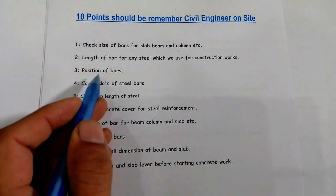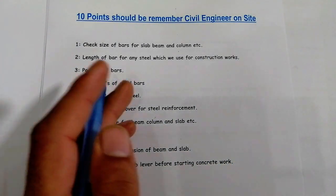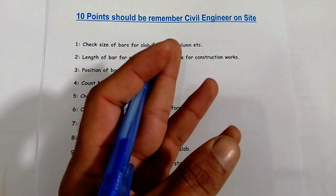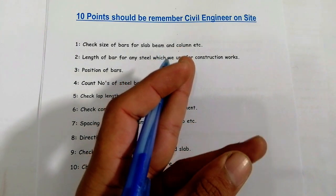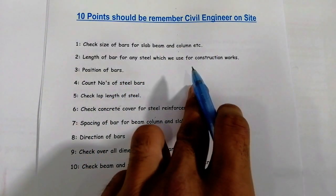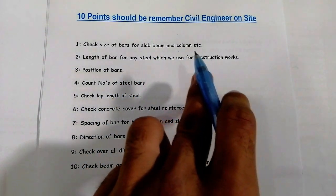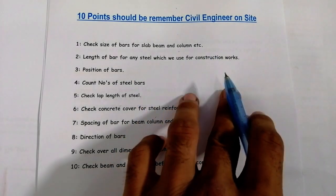The third point is: position of bars. Distribution bars and main bars — you will check the position of main bars and distribution bars and also their direction.